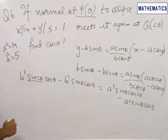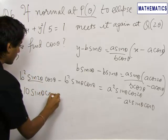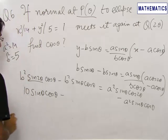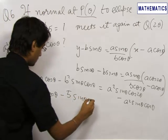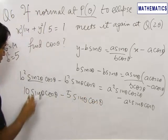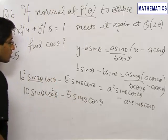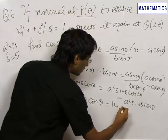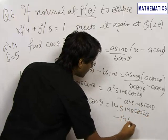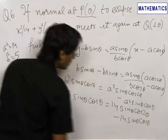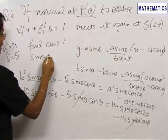sin2θ can be written as 2 sinθ cosθ, so this becomes 5 × 2, that is 10 sinθ cos²θ minus 5 sinθ cosθ equals 14 sinθ cos²θ minus 14 sinθ cosθ. Since sinθ is common in the entire equation and sinθ cannot equal 0, we cancel sinθ throughout.